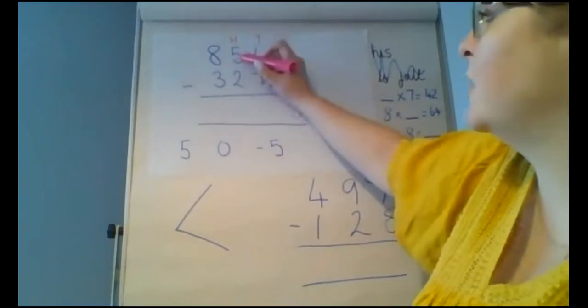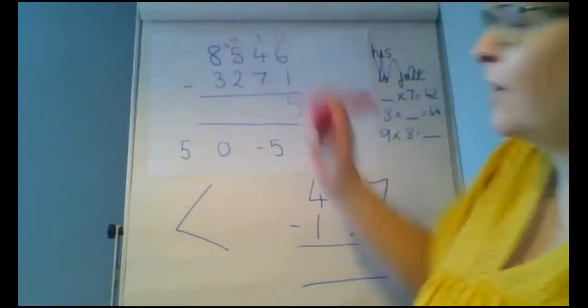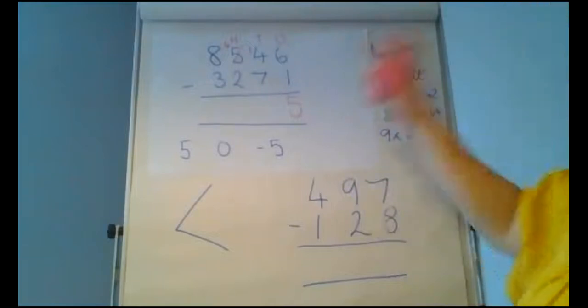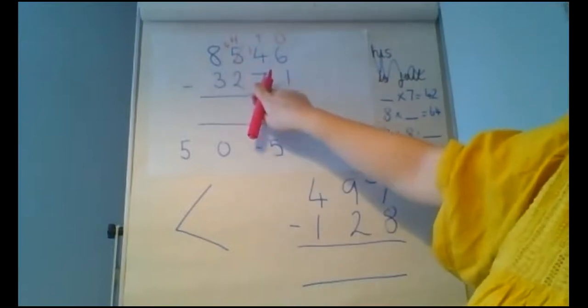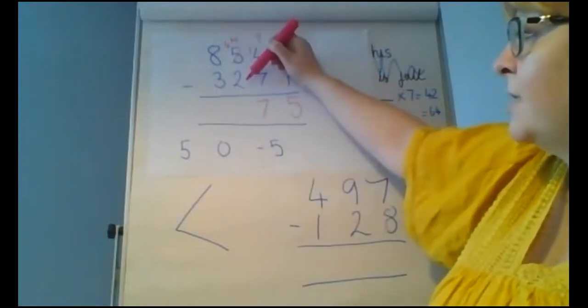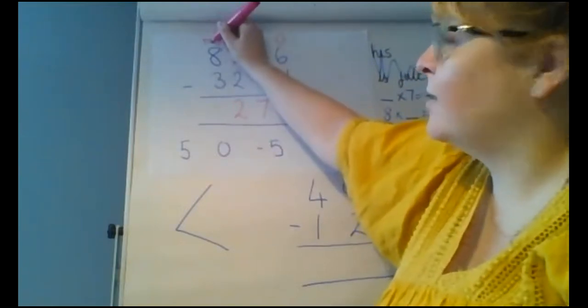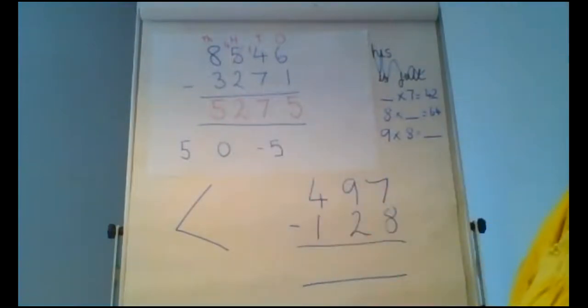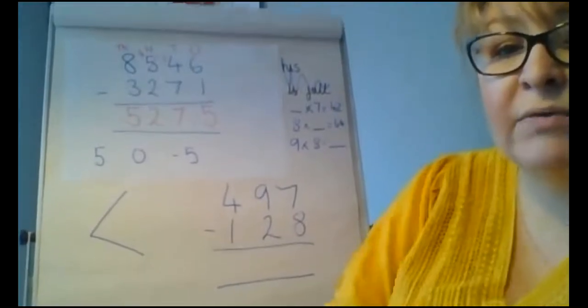And what we're going to do is we're going to exchange. So we're going to take some of our hundreds and we're going to reduce that down by 100 to four hundreds. And I'm going to give it over here. So now I've got 14 tens. So 14 tens take away 7 tens leaves me with 7 tens. Four hundreds take away two hundreds leaves me with two hundreds. And then 8,000s take away 3,000s is 5,000s. So there is your answer 5,275.